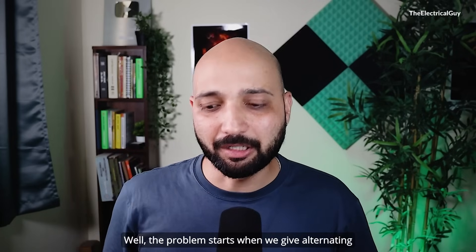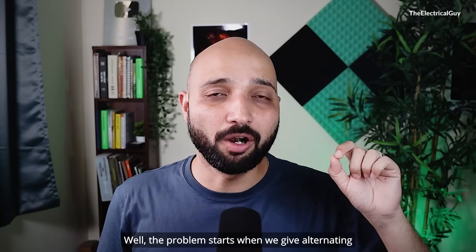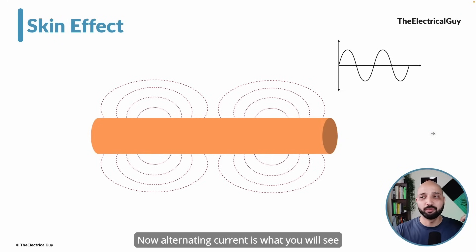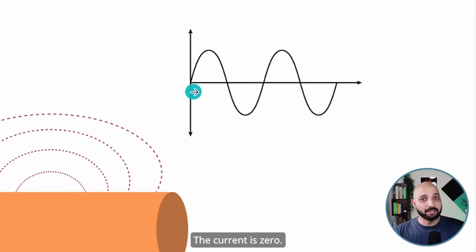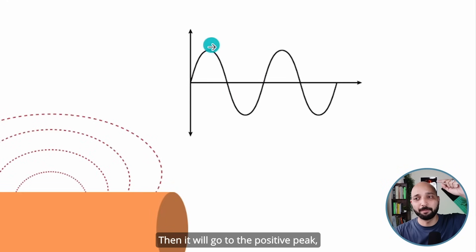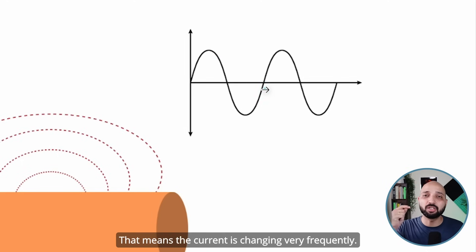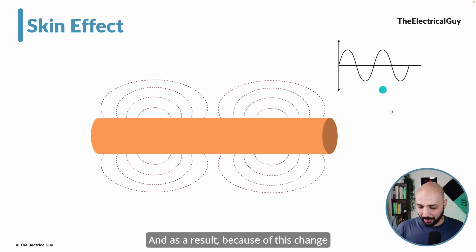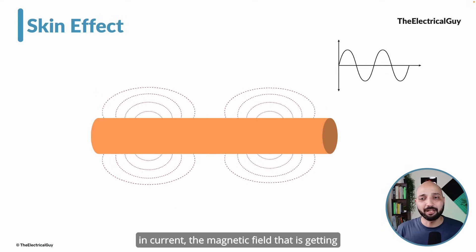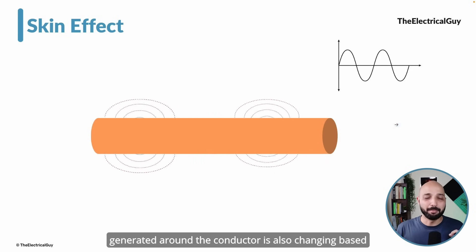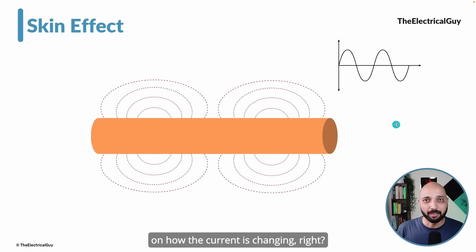The problem starts when we give alternating current. Alternating current, as you will see on the sine wave, goes from zero to the positive peak, then zero, then negative peak, and then zero again. That means the current is changing very frequently. And as a result, the magnetic field generated around the conductor is also changing based on how the current is changing.